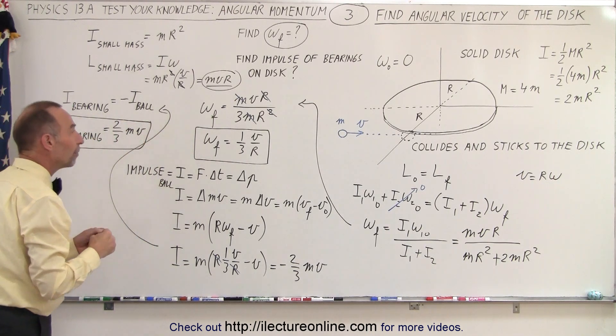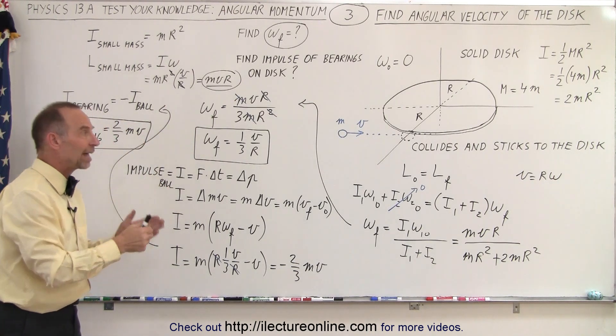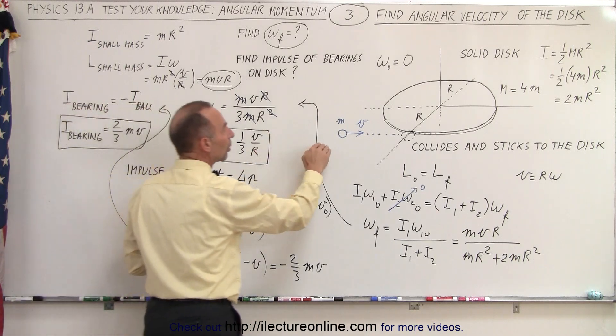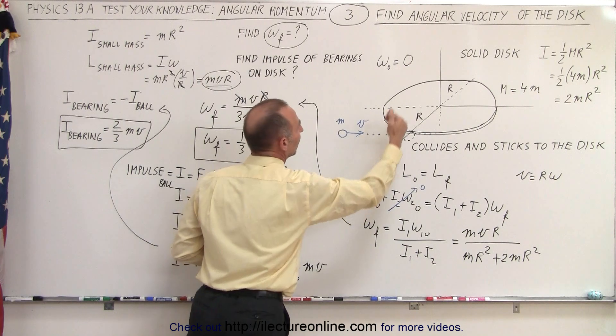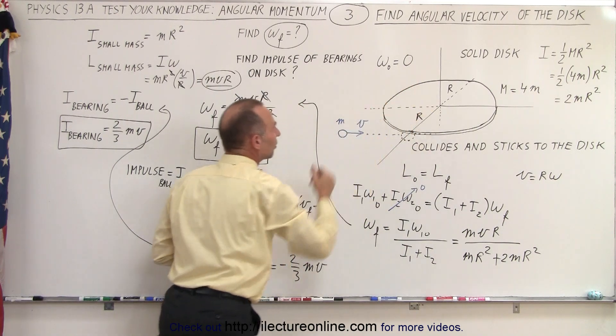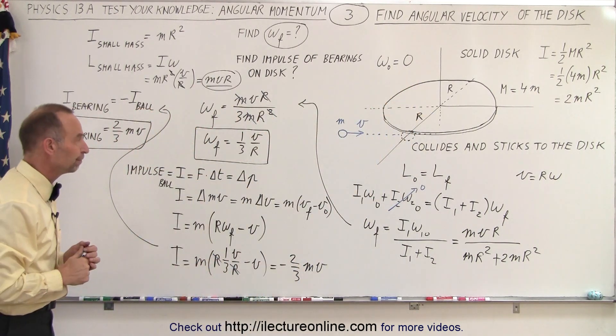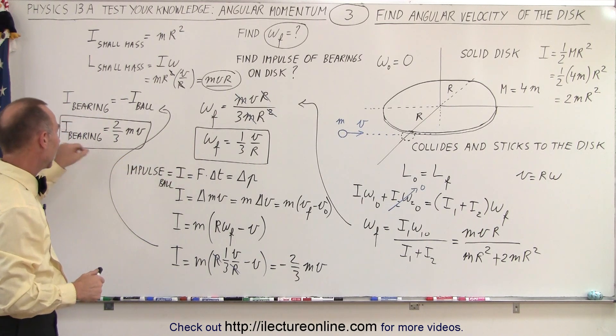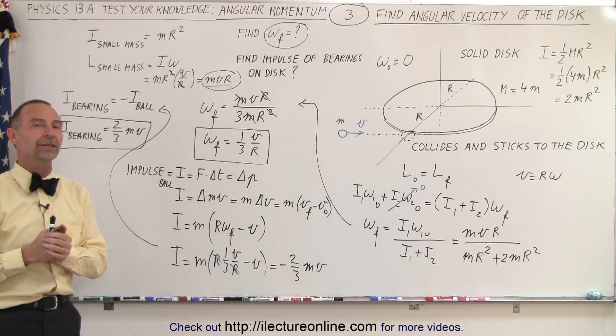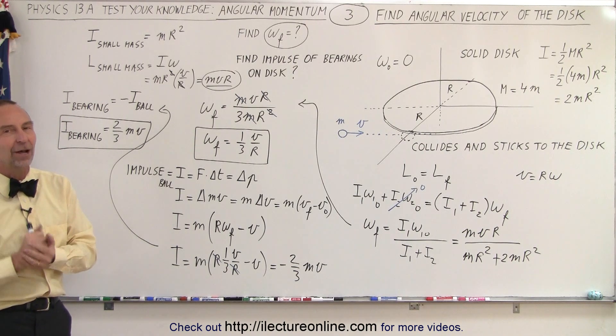And that's the impulse of the bearing on the disc as a result of the ball hitting the disc. So the impulse of the disc onto the ball will then result in an impulse of the bearing onto the disc in the opposite direction. And that's how we find the final ω, the final angular velocity, and the impulse of the bearing on the disc. And that is how it's done.